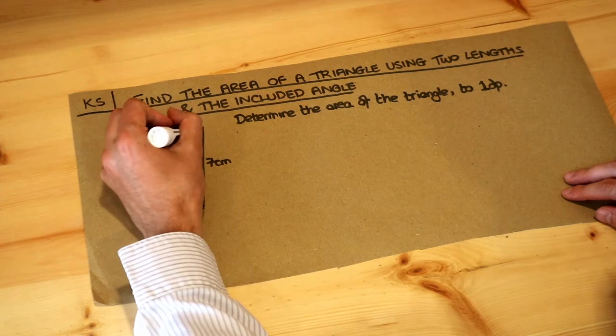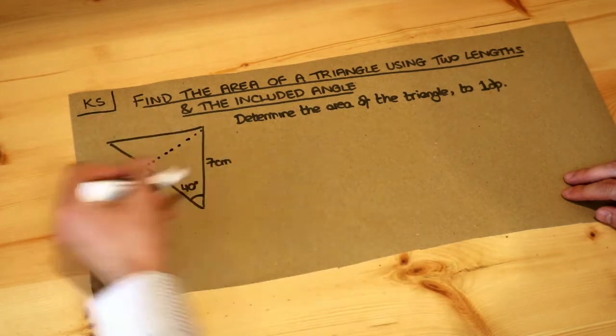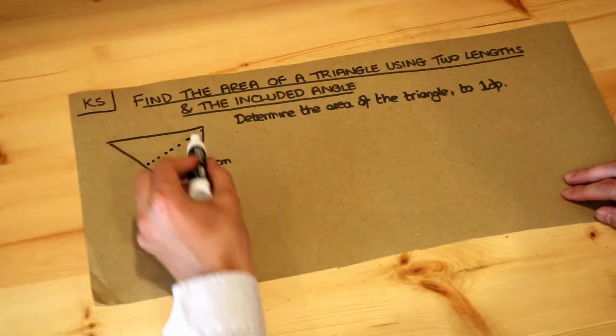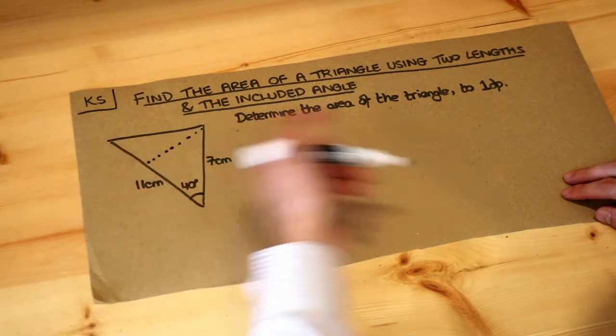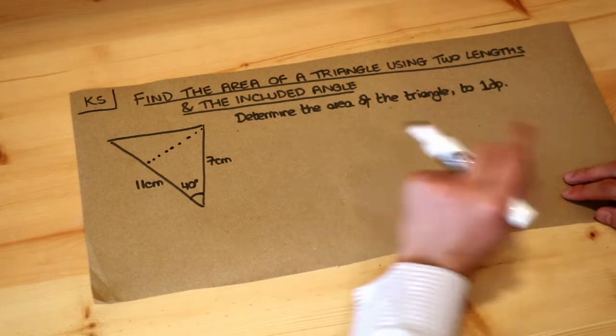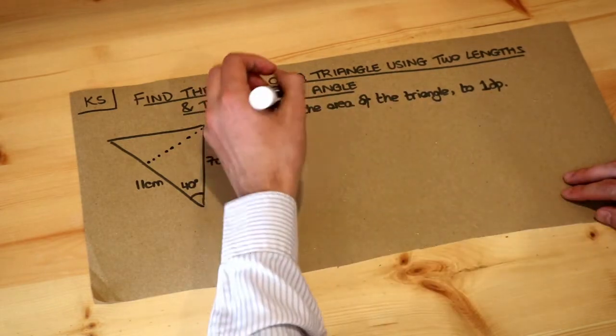And actually it would be quite easy to find that perpendicular height by trigonometry. If we use the 11 as the base we could use basic SOHCAHTOA to work out this length and that's how we could actually prove the formula I'm about to show you. But just for the sake of time I'm not going to go through the proof, I'm just going to give you the formula.